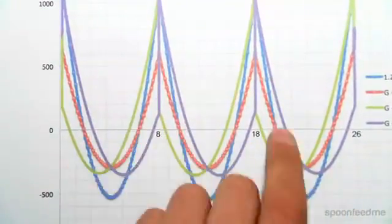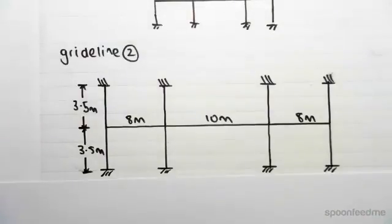So now, part of this moment distribution process, which we're going to get to later on to develop a bending moment diagram envelope like this, is we need to know the stiffness of our members.